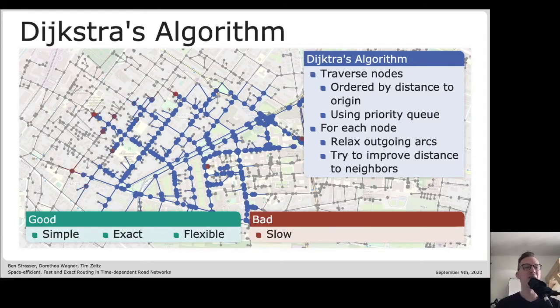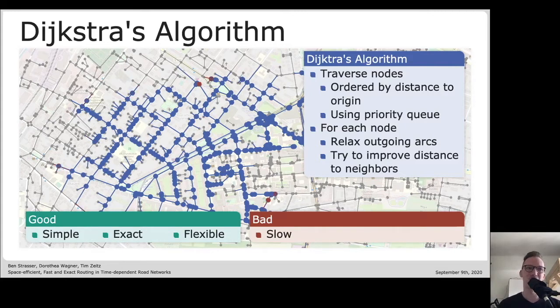However it has one big problem, and that is it is rather slow. Dijkstra's algorithm will inherently explore all nodes that are closer to the origin than the target node is. In case of long range queries in modern road networks which may have millions of nodes and edges, that is too slow, leading to running times of several seconds. But since this is a very practical problem, a lot of research has been done in the past 15 years.